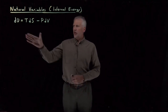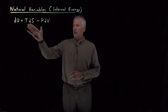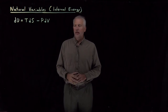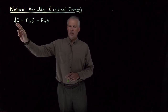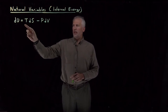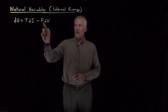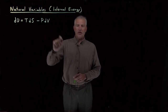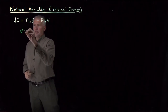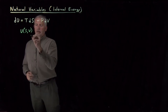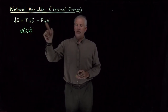We have this equation called the fundamental equation for the internal energy: du is equal to T dS minus P dV. The fact that the change in internal energy is represented as something times the change in entropy and something else times the change in volume suggests that it might be natural to think of the energy varying as a function of entropy and volume.